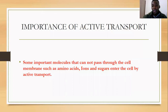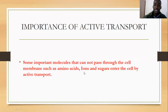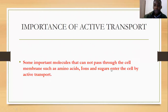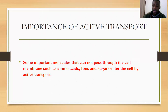The importance of active transport: some vital molecules cannot pass through the cell membrane unaided because the membrane is negatively charged, amino acids are negatively charged, and some ions are negatively charged — like charges repel. So we must force important molecules against the concentration gradient using energy. Sugar molecules are also often too big to pass through the cell membrane, so active transport squeezes them through using energy.